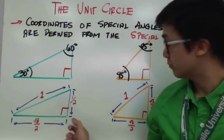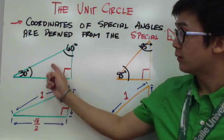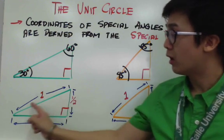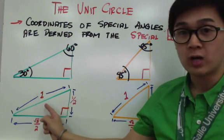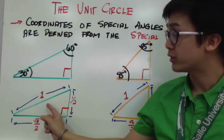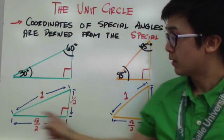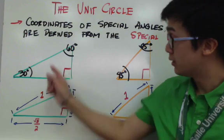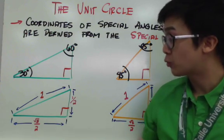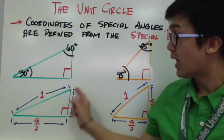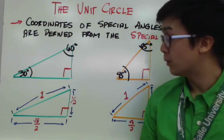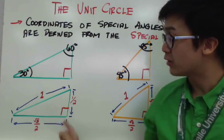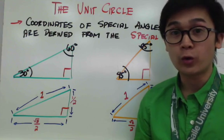For the 30-60-90 degree triangle, the hypotenuse will measure 1, and we will use this in our unit circle. The length of the longer leg is square root of 3 over 2, and the shorter leg will be 1/2. You need to remember these values because they are what you will see on the coordinates of our unit circle.